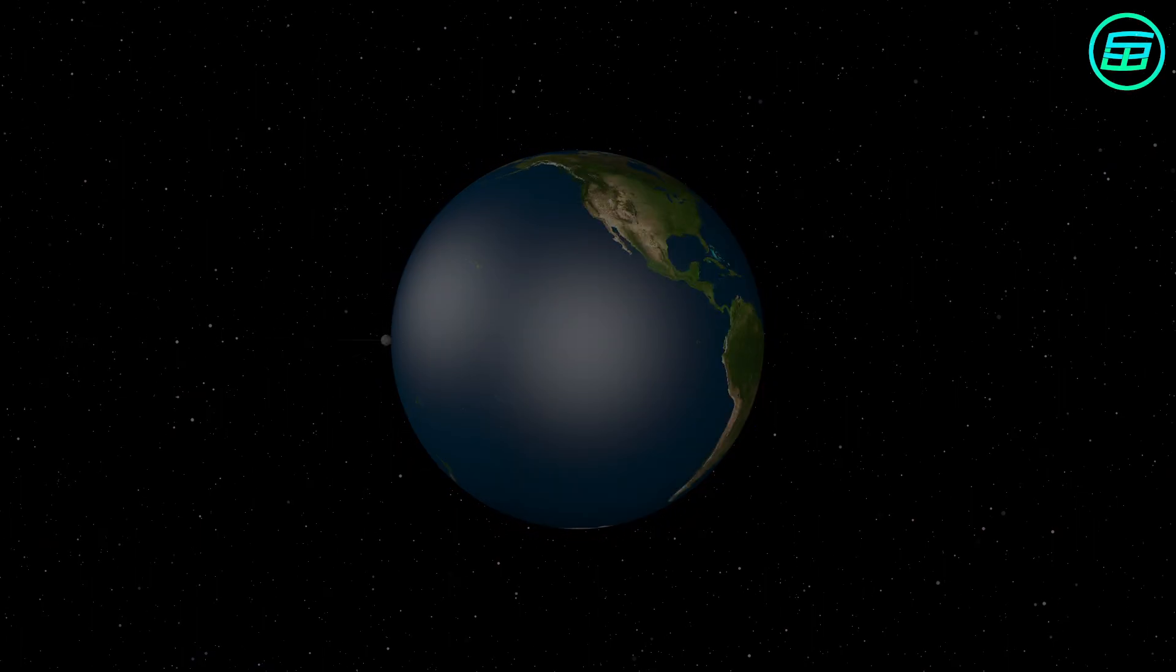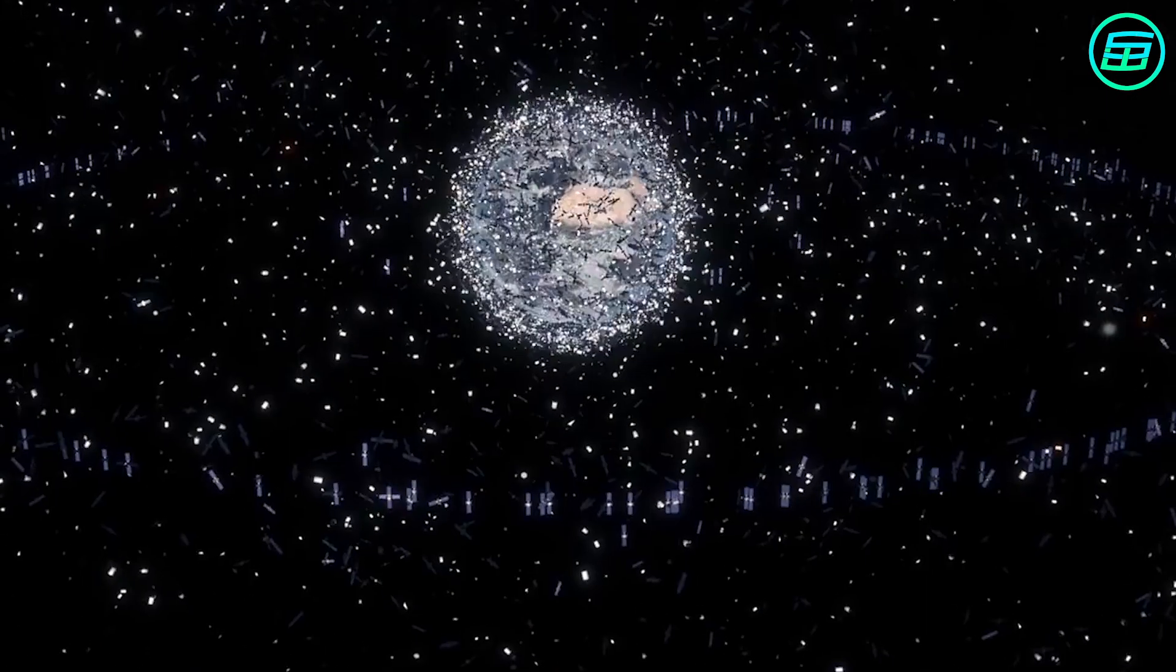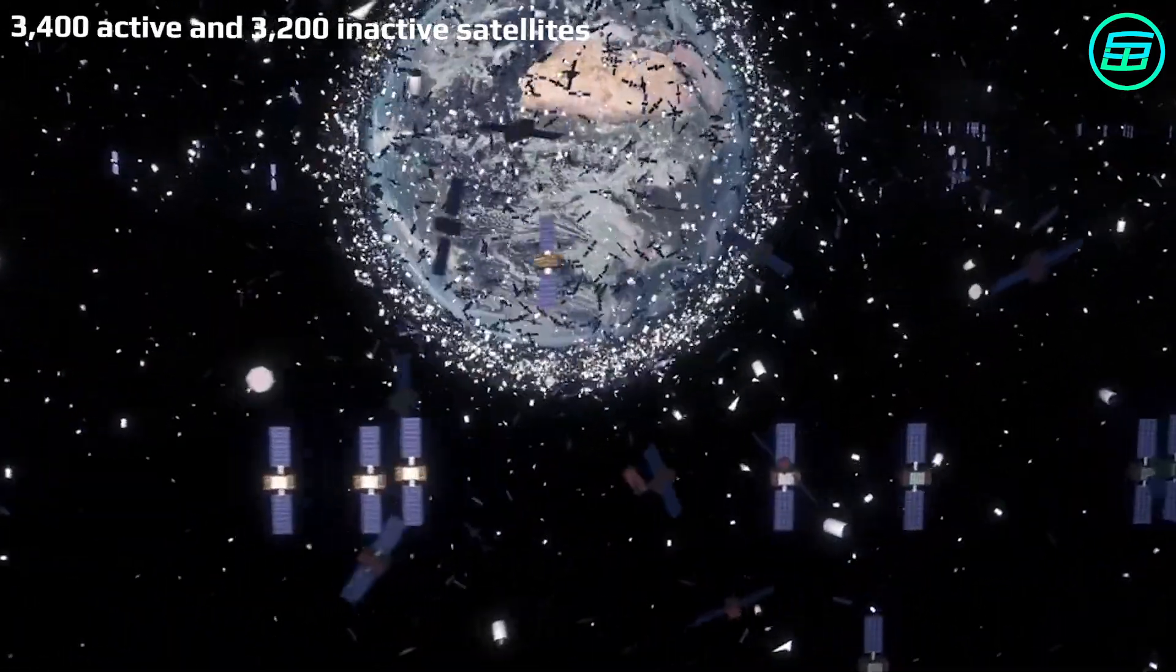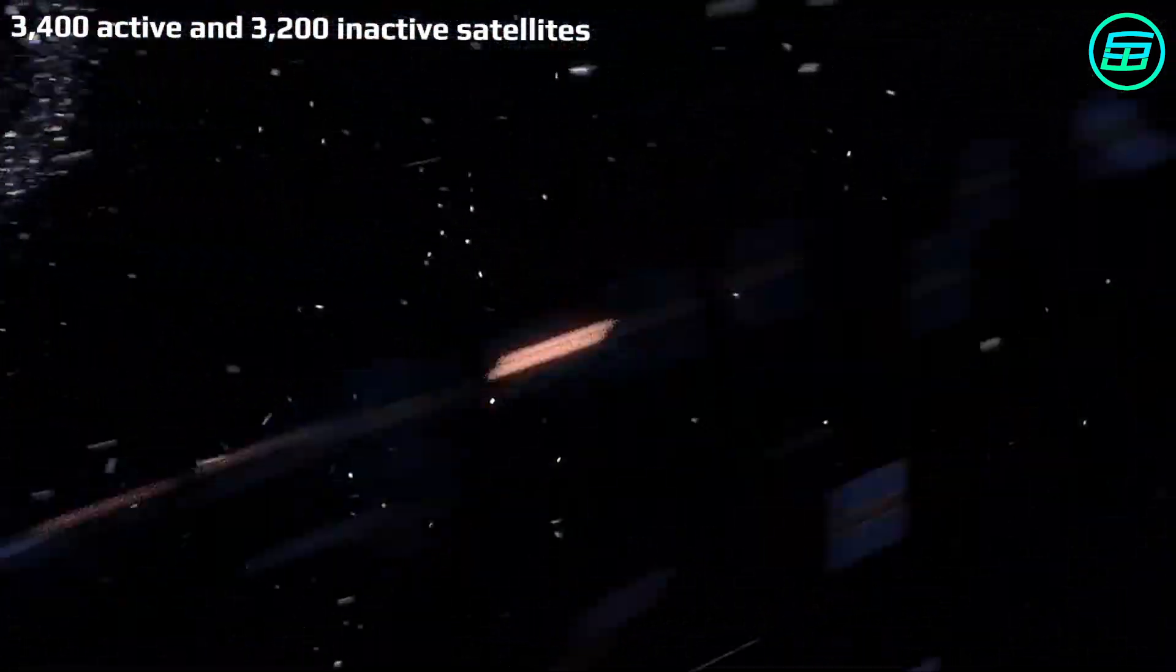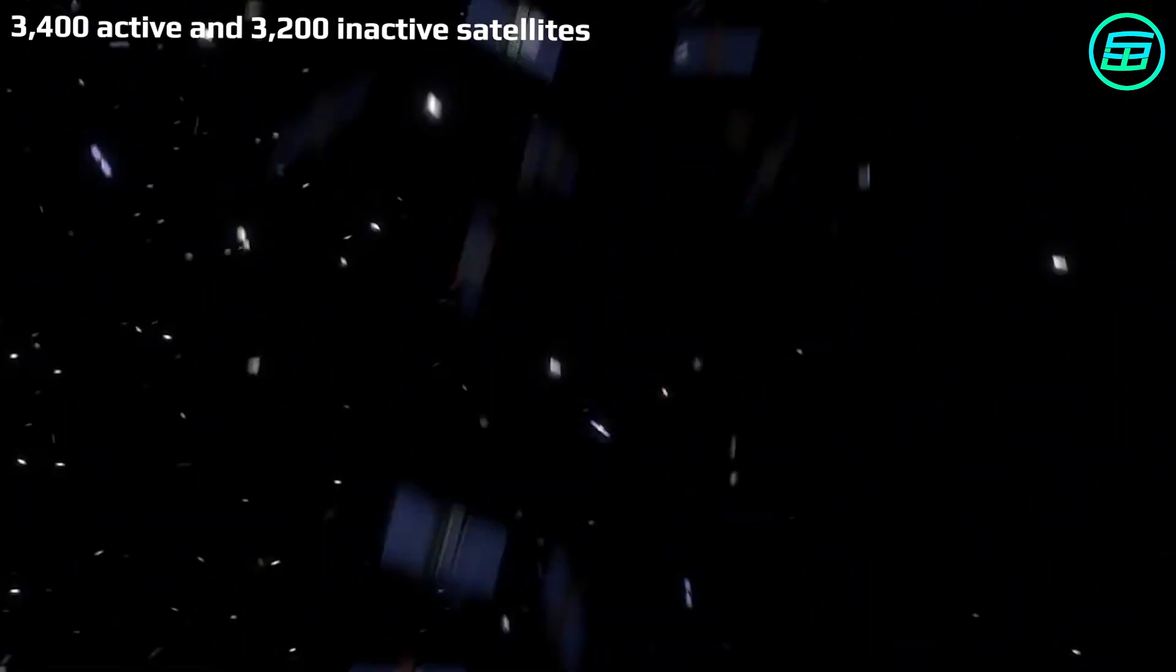64 years later, there are about 3,400 active and almost 3,200 inactive satellites going around our planet.